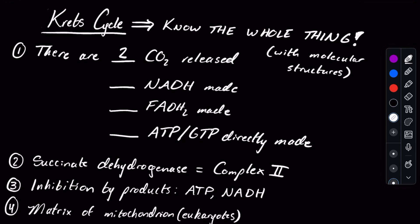The next thing you may need to know is that there are three NADH molecules made. These are going to go into the electron transport chain and help us make some ATP. There is one FADH2 made, and there is one ATP or GTP — depending on how you look at it — directly made.